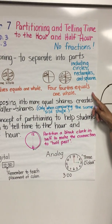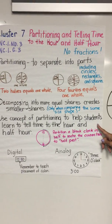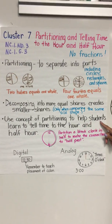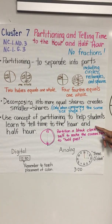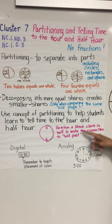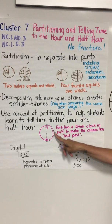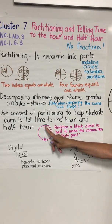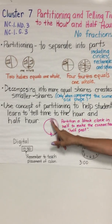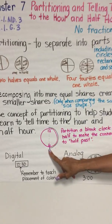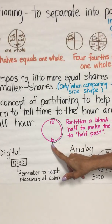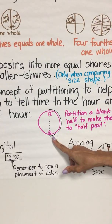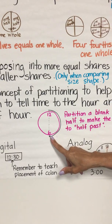We are going to transition using the idea of partitioning to help students learn to tell time to the hour and half hour. Here we are using a clock and showing them that if it was partitioned into half, you are going to have half past. This is a great activity to do with a paper plate.